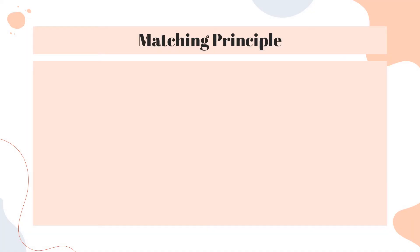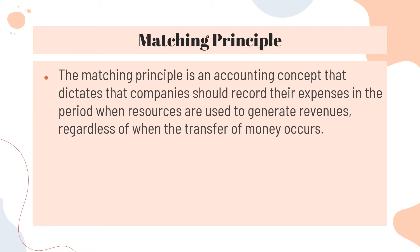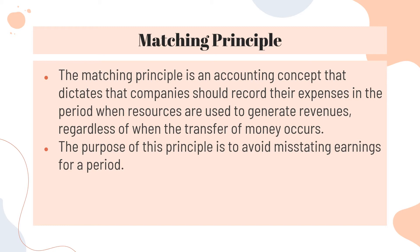This concept says that whichever revenue you have earned in one period, you will record the matching expense against it in that same period. The matching principle is an accounting concept that dictates that companies should record their expenses in the period when resources are used to generate revenues, regardless of when the transfer of money occurs. The purpose of this principle is to avoid misstating earnings for a period.